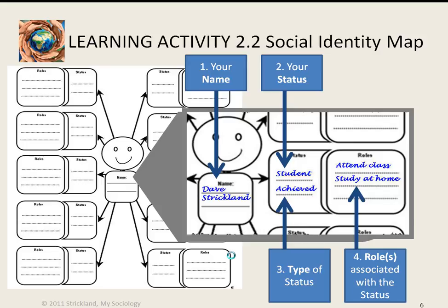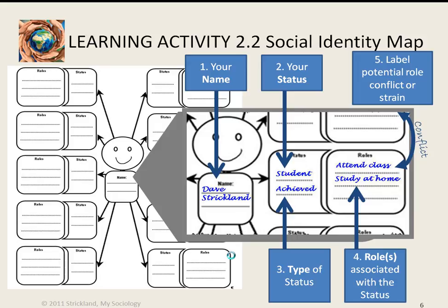Finally, look at all your status positions and the roles that go with them and decide if there are any cases of role conflict or role strain. If you see any, draw an arrow between the roles that are involved and label it either conflict or strain depending on which one fits. If you can do this without any difficulty, then you probably understand the concepts of status, role conflict, and role strain pretty well.